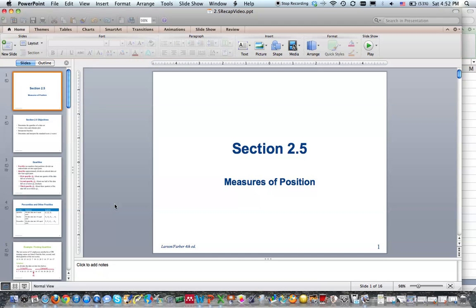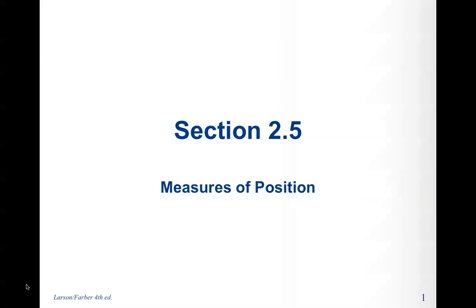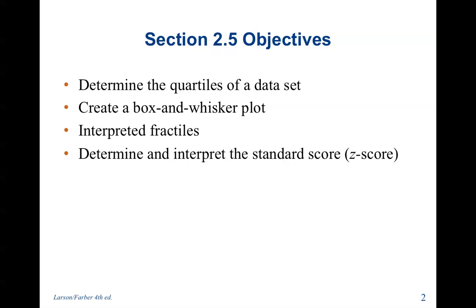Measures of position, section 2.5. So in this section, we're going to cover quartiles of a data set, creating a box and whisker plot, interpreting fractiles, and determining and interpret the standard score.